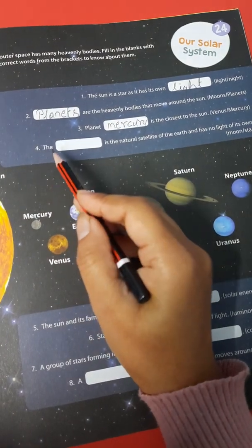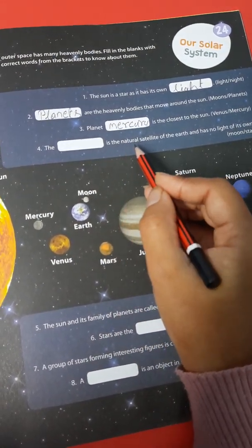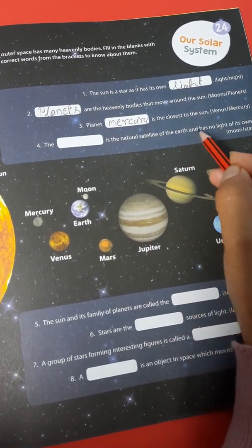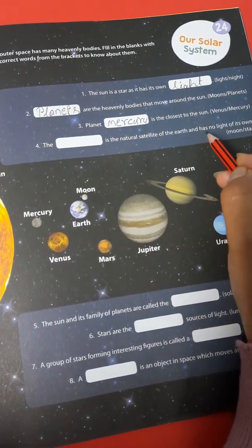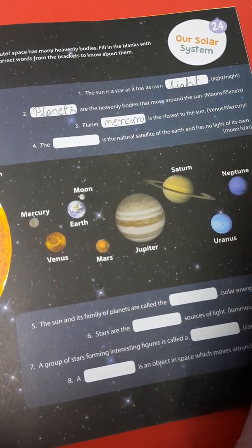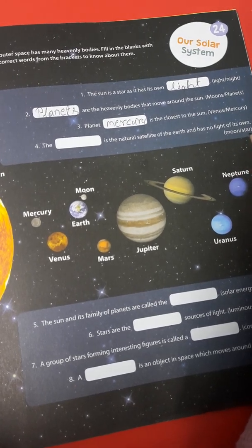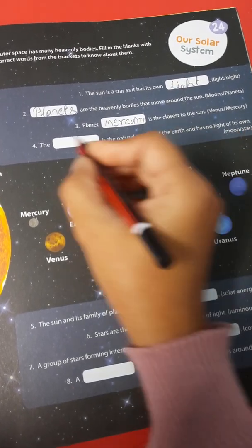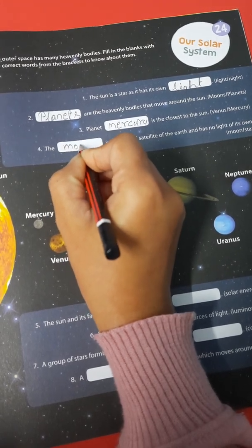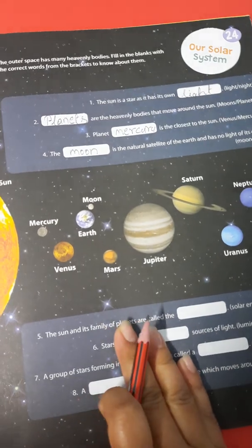Number 4. The dash is the natural satellite of the Earth and has no light of its own. Moon or star? It's moon. You write here: M-O-O-N. Moon.